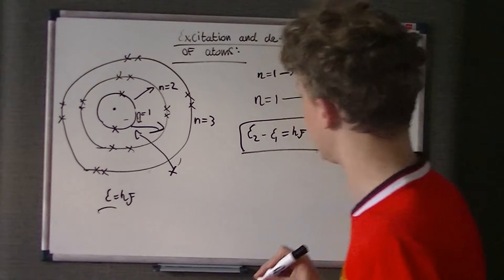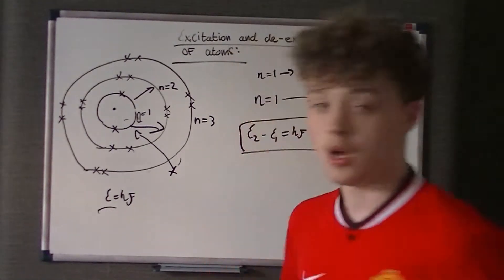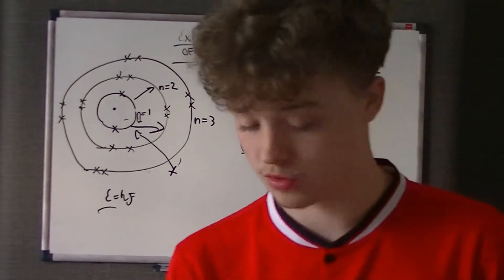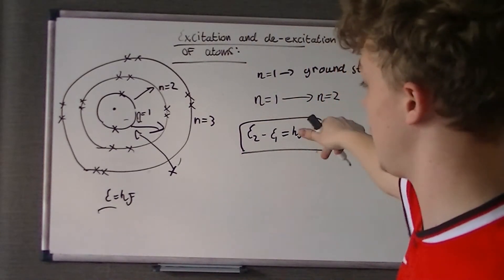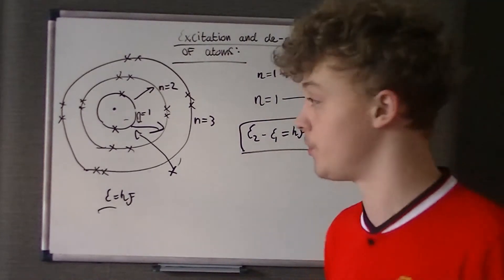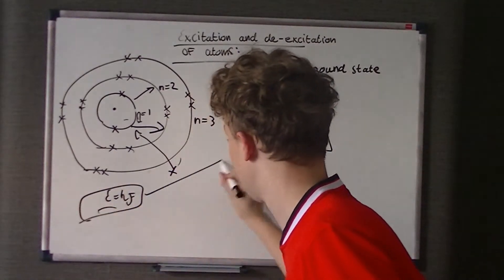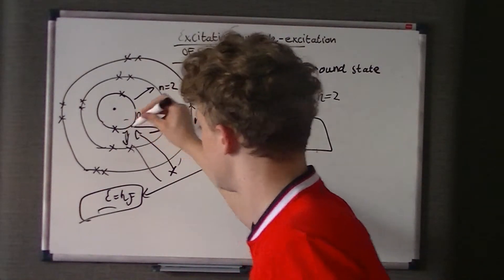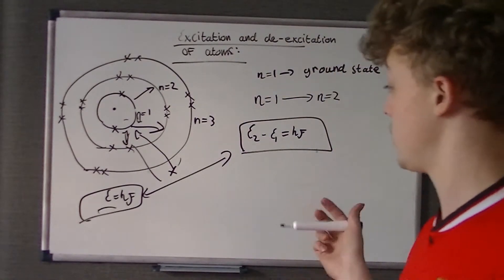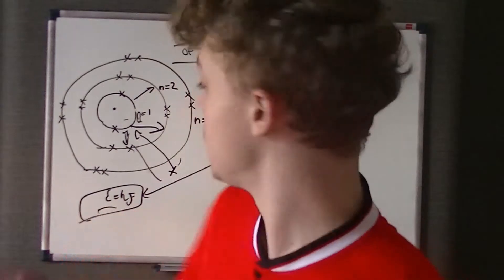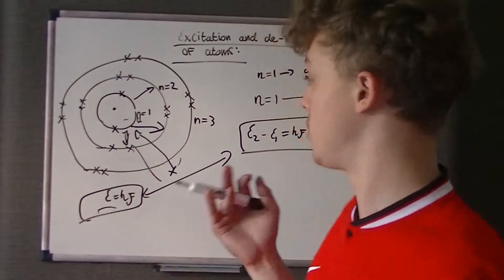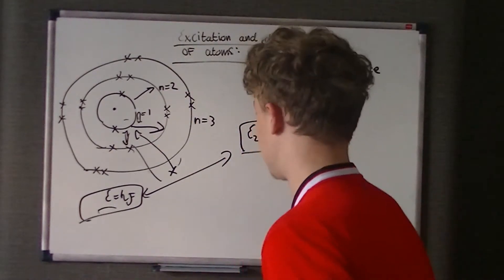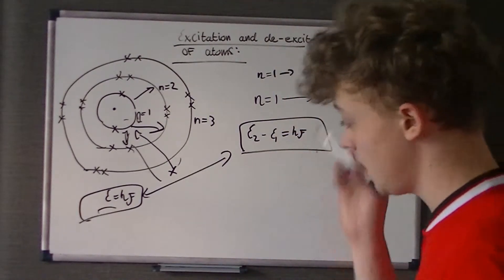But unlike this, there's no formula for the energy difference apart from E2 take E1. And that doesn't really equal anything, just equals energy difference, whereas that equals HF because it's the energy of a photon. So we combine these two in terms of the energy difference between the two states to get that. So when an electron has an impact, unlike a photon, it's just the energy that is absorbed. So that's how it transfers states.